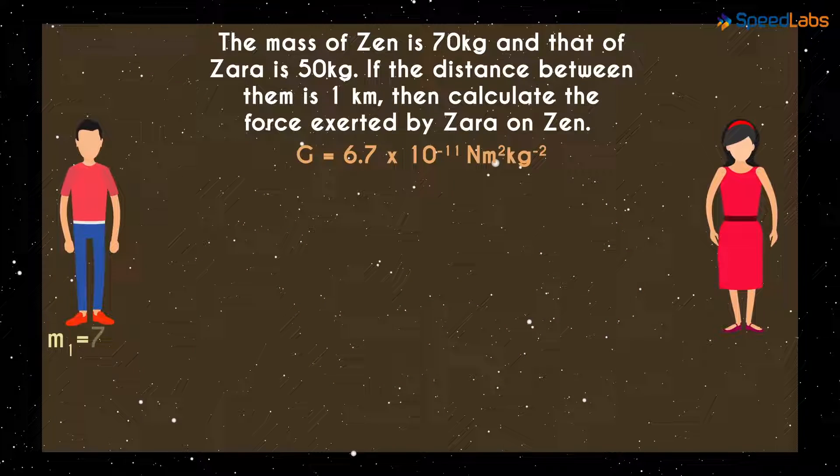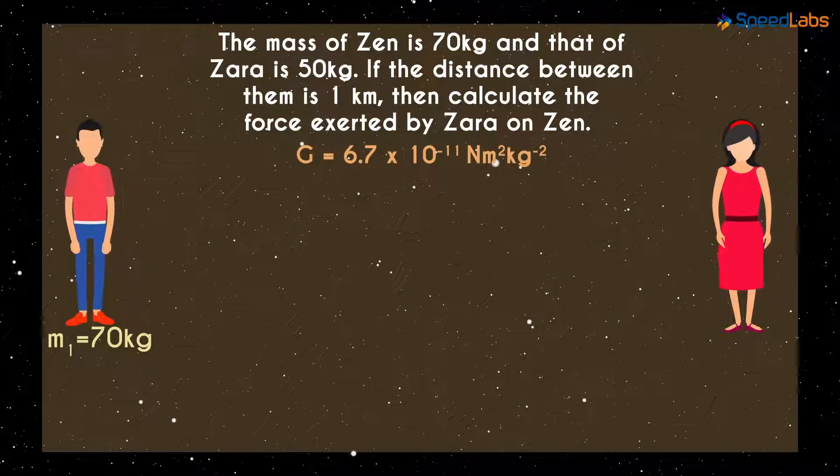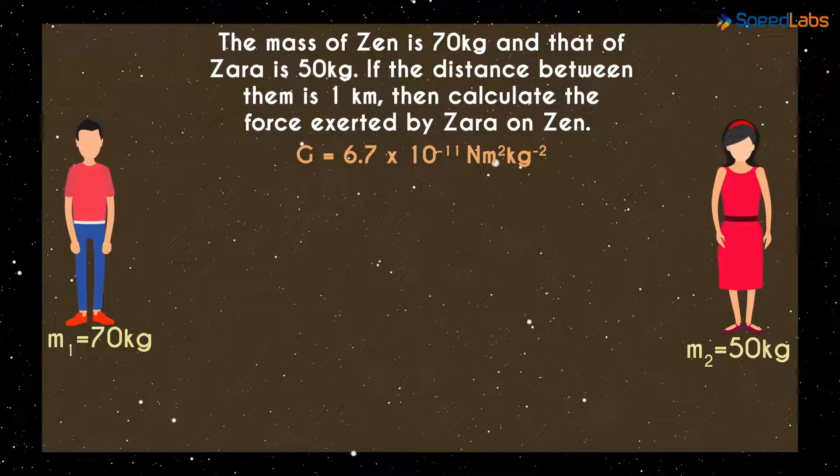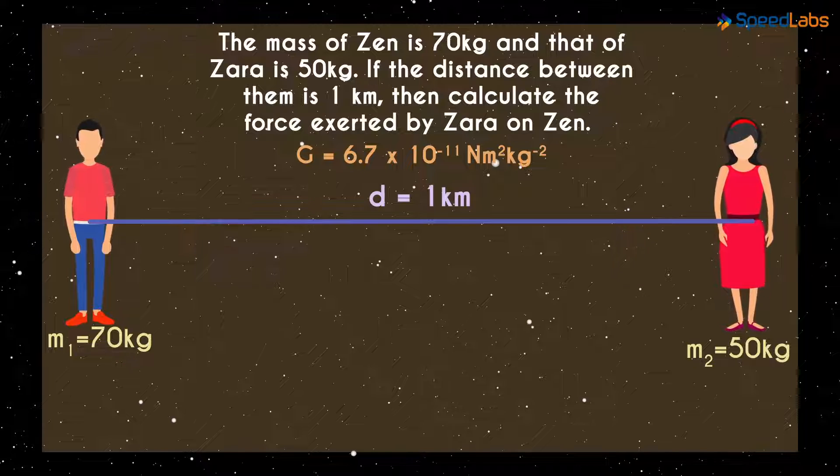So let M1 be Zen's mass which is 70 kilograms and let M2 be Zara's mass which is 50 kilograms. And the distance D between them is 1 kilometer.